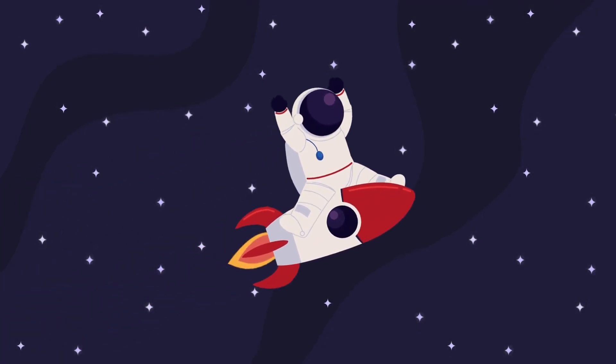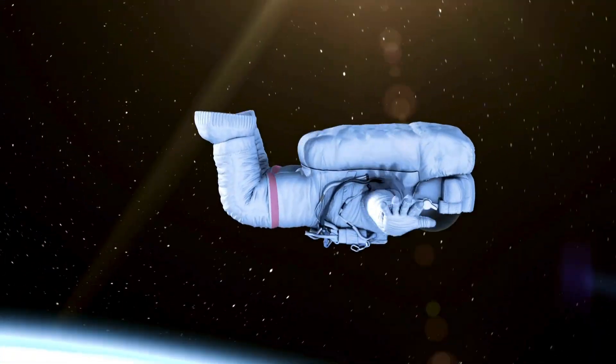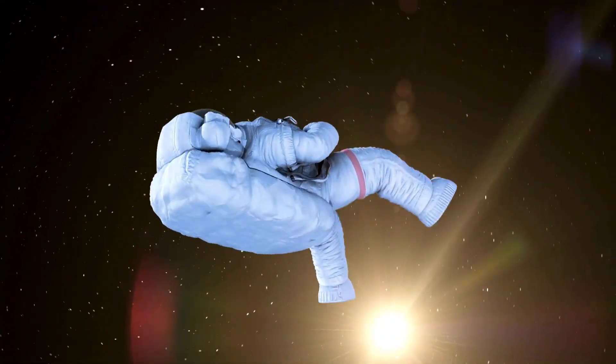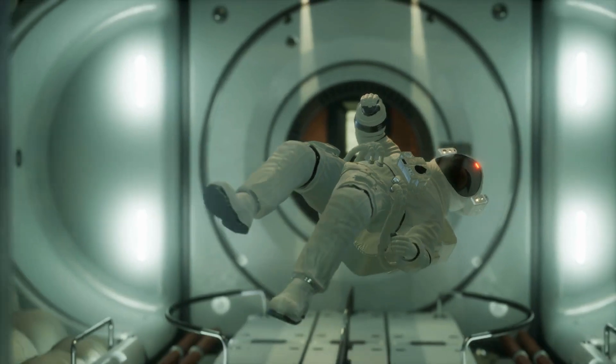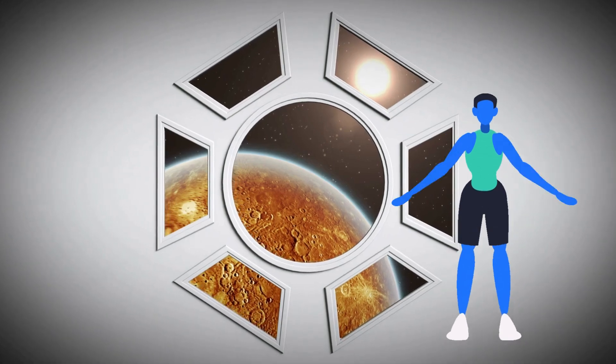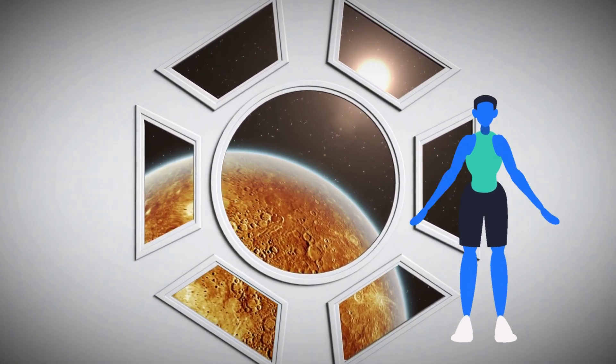Have you ever wondered what life is like on a space station? Astronauts float around because there's no gravity. They eat yummy space food, sleep in special sleeping bags, and even exercise to stay strong. Living in space is like a super cool adventure.